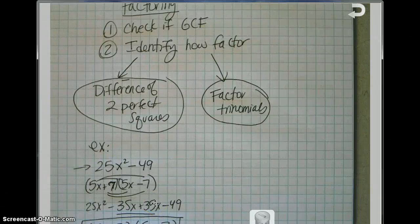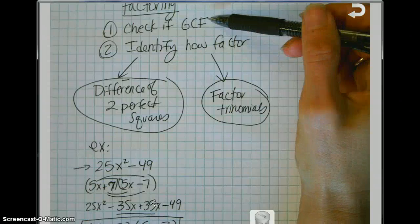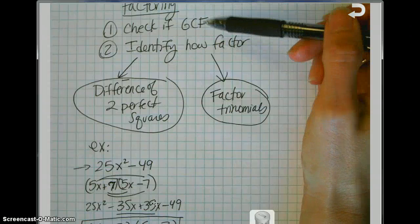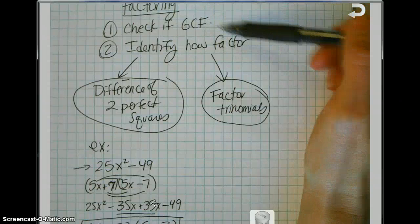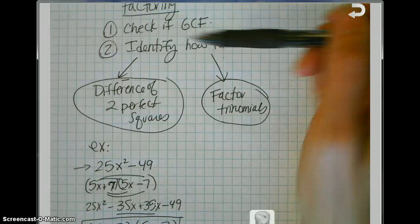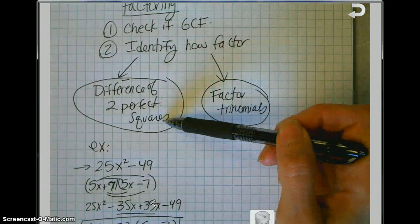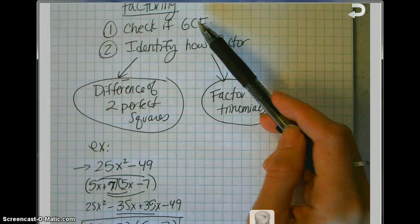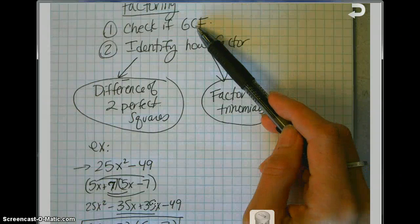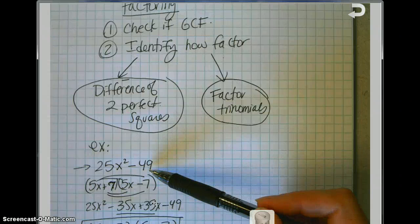Welcome back to factoring. When we talked last, we talked about checking to see if it has a greatest common factor, and also how you should factor it. If it has two terms, chances are it's the difference of two perfect squares. And after taking out a greatest common factor if possible, you talked about how to factor the difference of two squares.